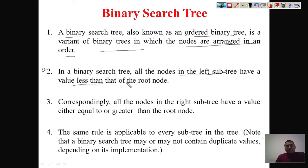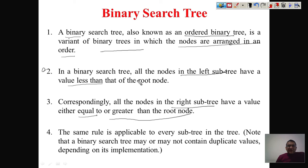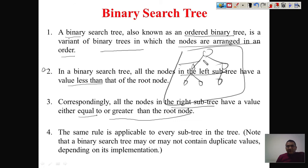In a binary search tree, all nodes in the left subtree have values less than the root node, and the right subtree contains all values greater than or equal to the root node. Importantly, this rule is not only applicable at the root — it must be applicable at all subtrees throughout the entire tree, meaning the property must hold at every node.